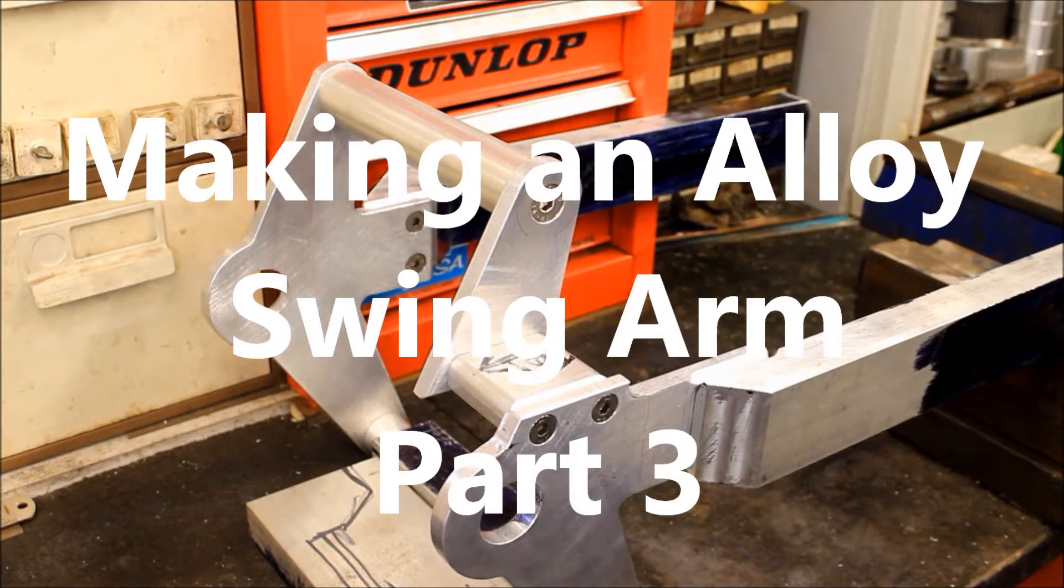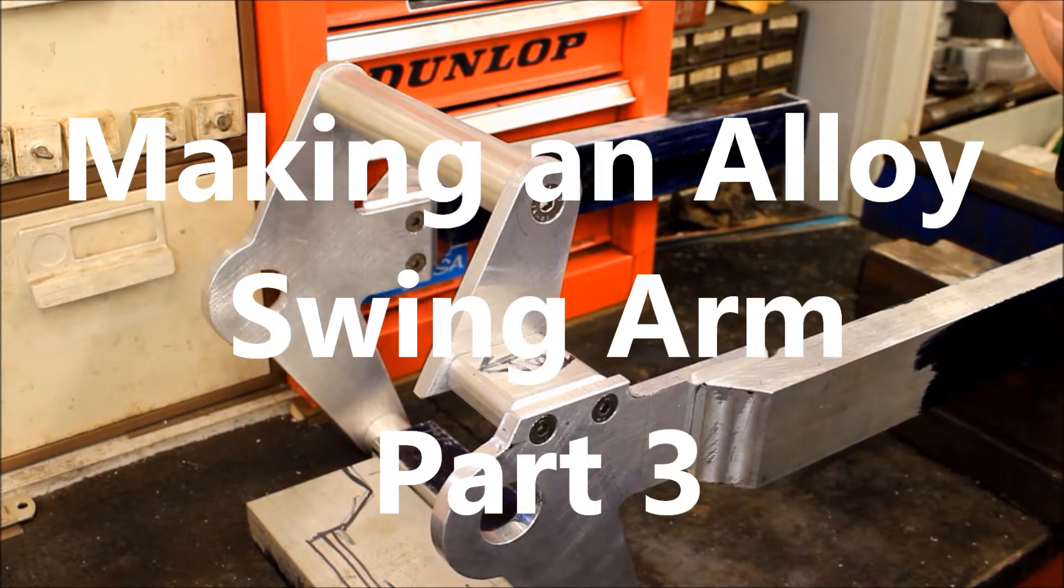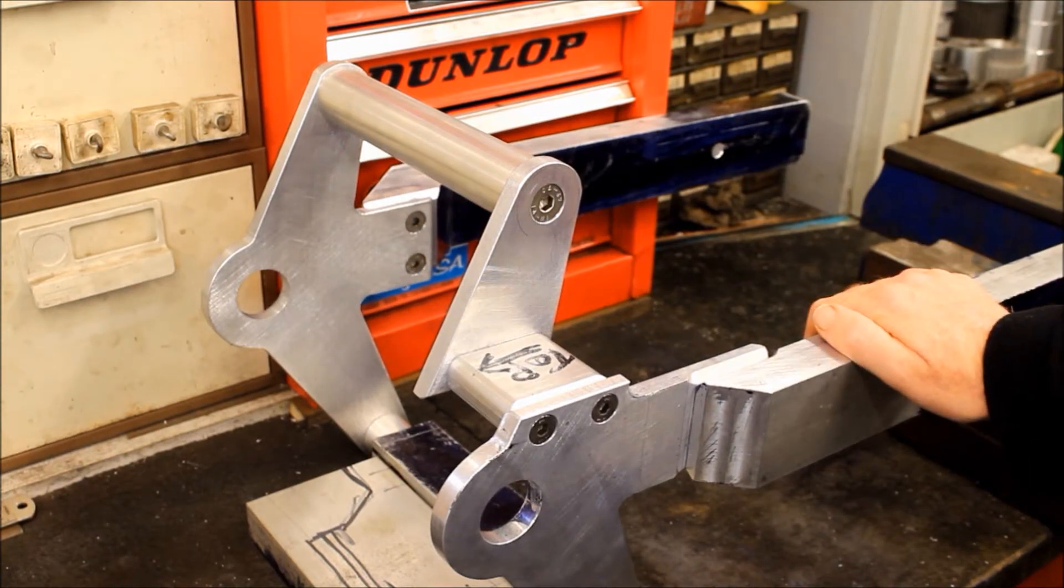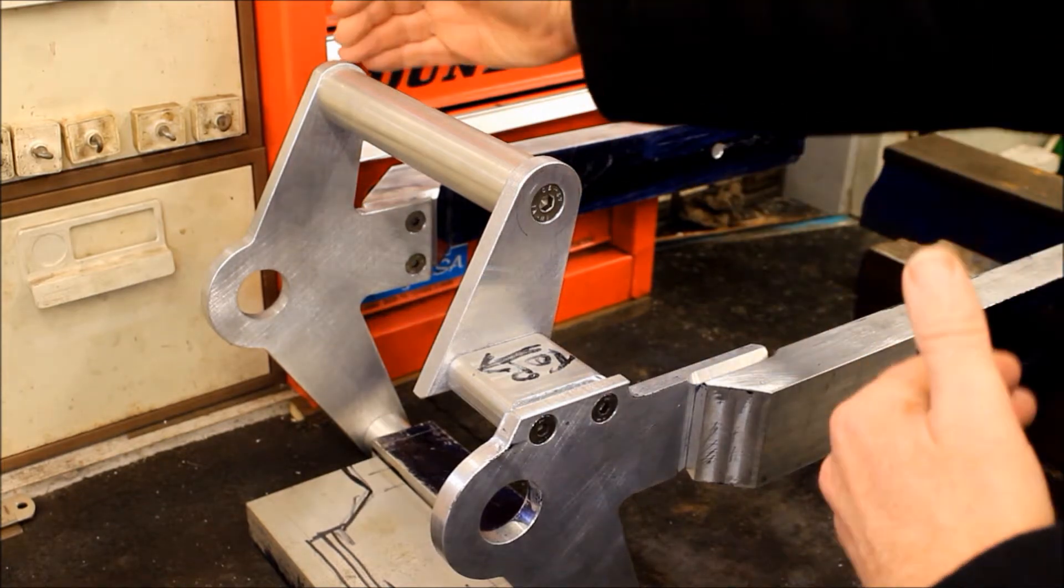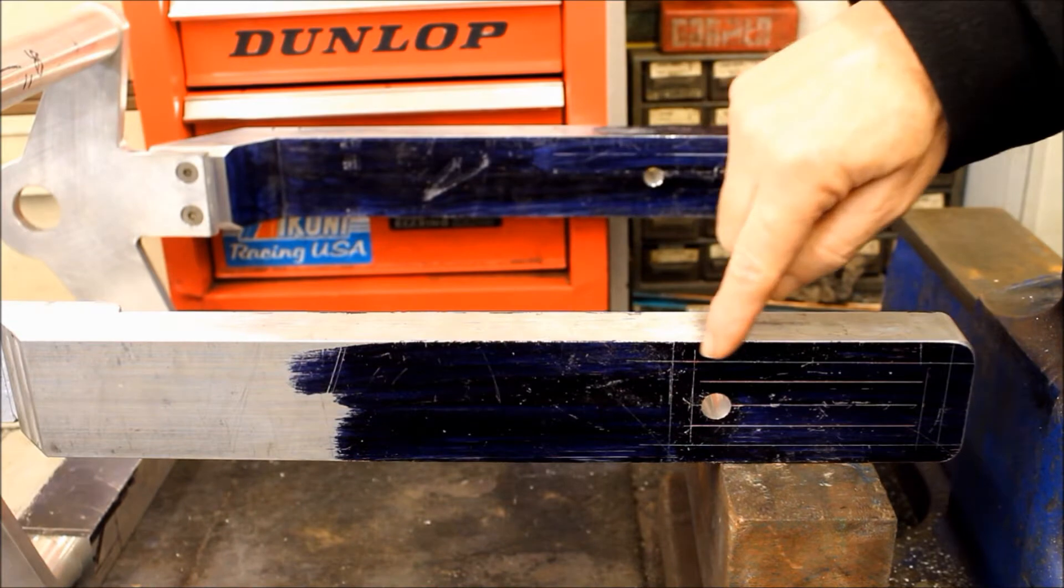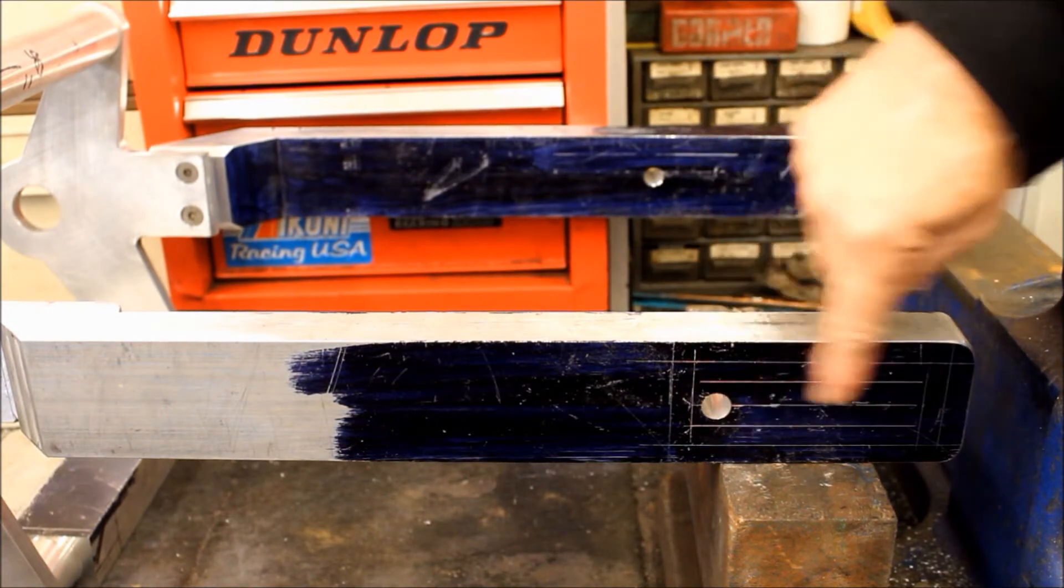Hello again, here we are back in Jeff's shed. Part three of making an aluminum swing arm for my Harley Softail, and it's coming together quite well now. The two sides have been bolted together along with the back of the swing arm. We're just starting work on milling out these holes here.